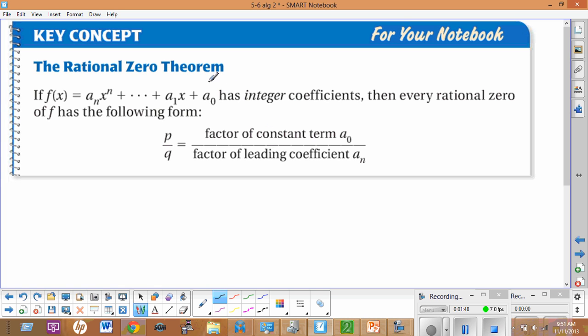We're going to designate as p, so we'll call this guy p, over a factor of the leading coefficient, we're going to call this guy q. So every zero that's rational has the form p divided by q or one of its factors. So let's take a look at exactly how that works.